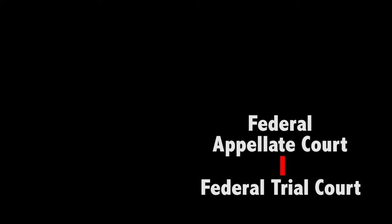Federal cases start in a trial court almost identical to a state court. They determine matters of law and matters of fact. Matters of law are appealable to a federal circuit court of appeals, and those decisions are once again appealable to the United States Supreme Court. So we have two different court systems: the state court system and the federal court system.